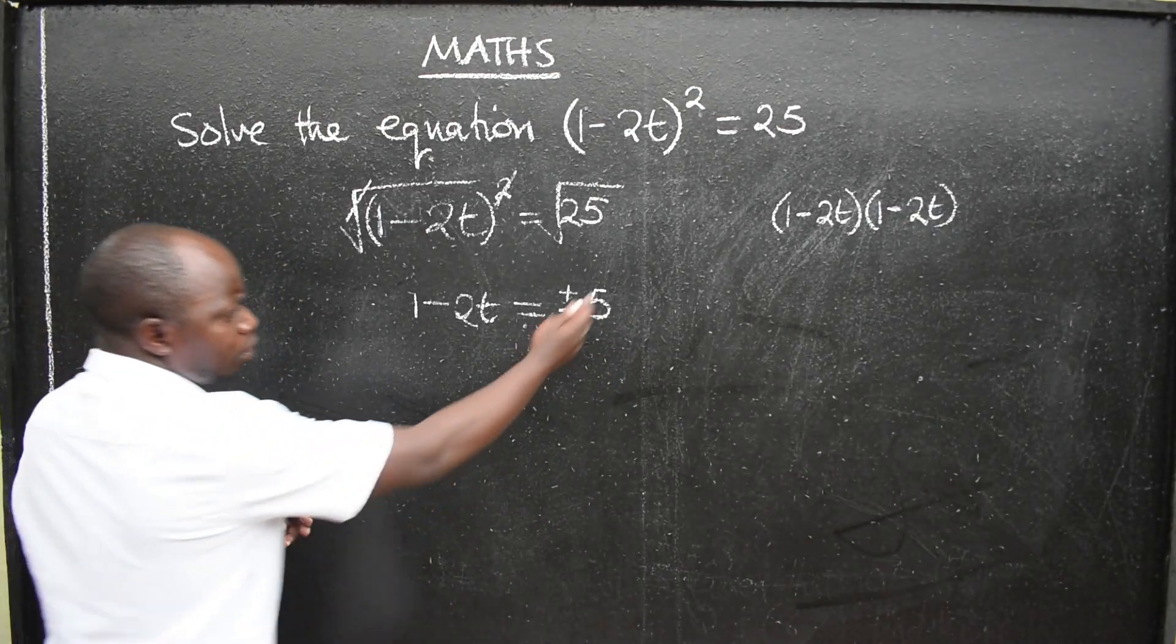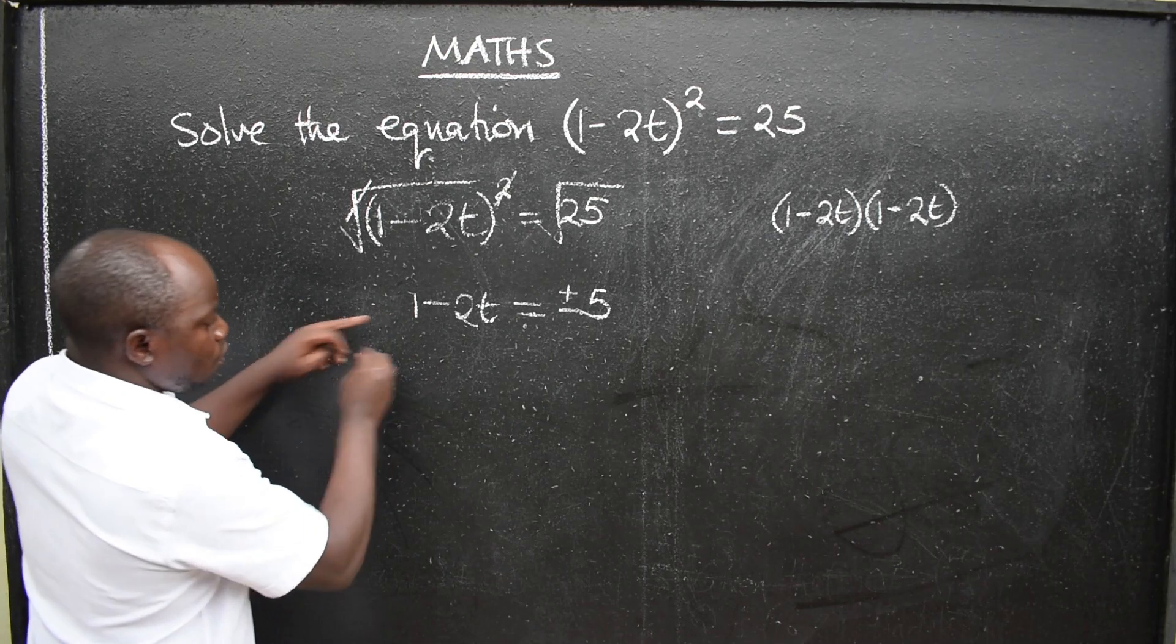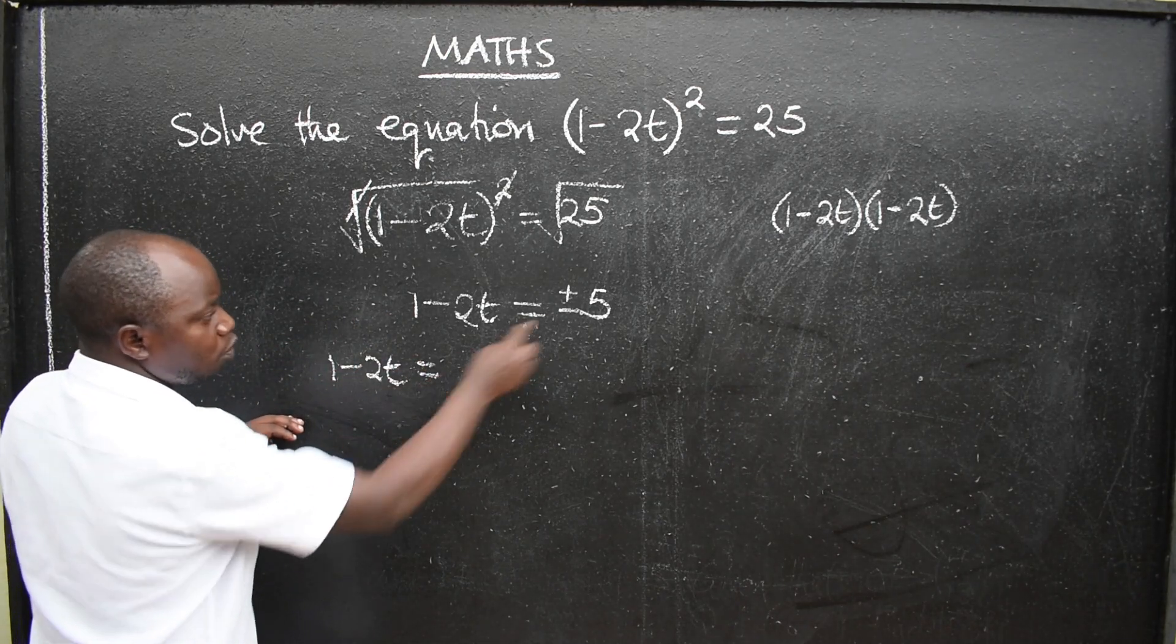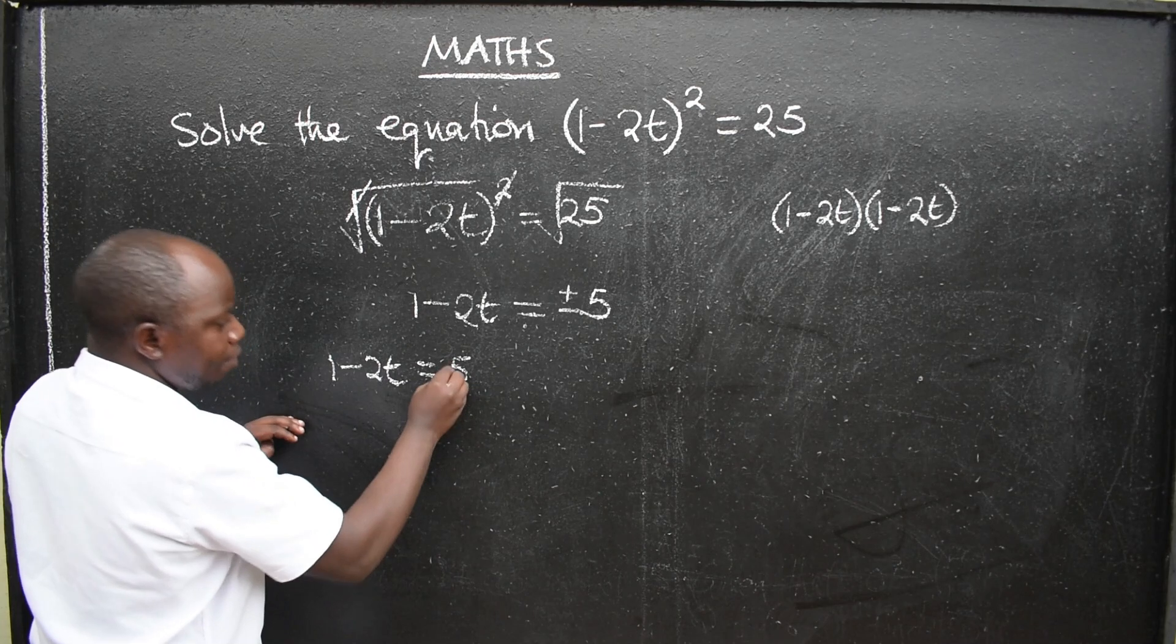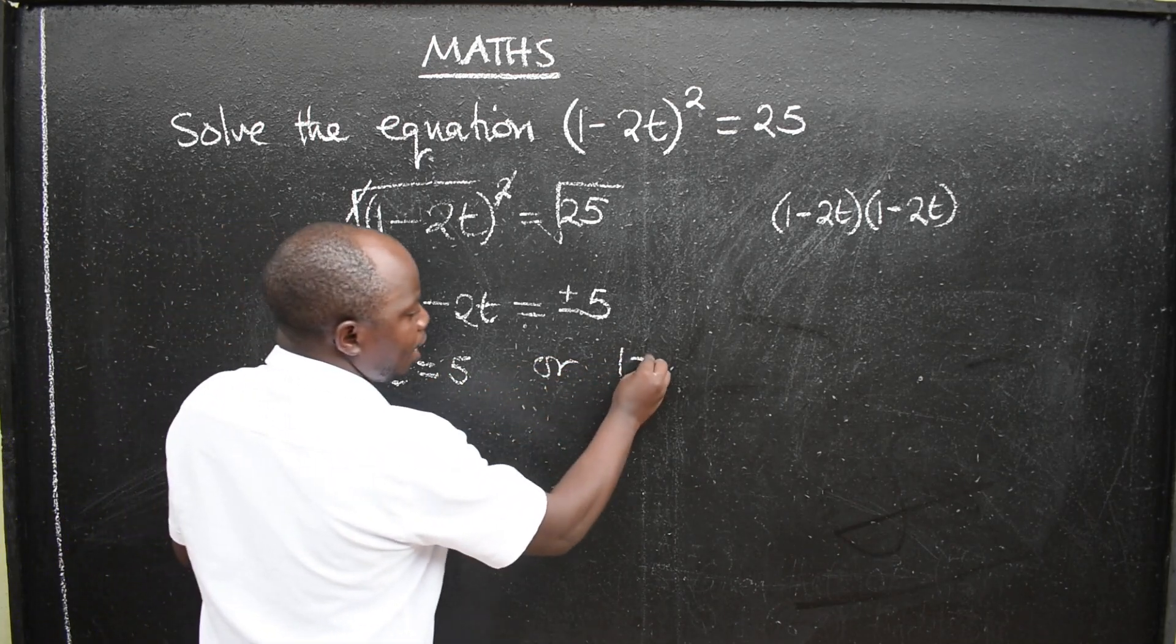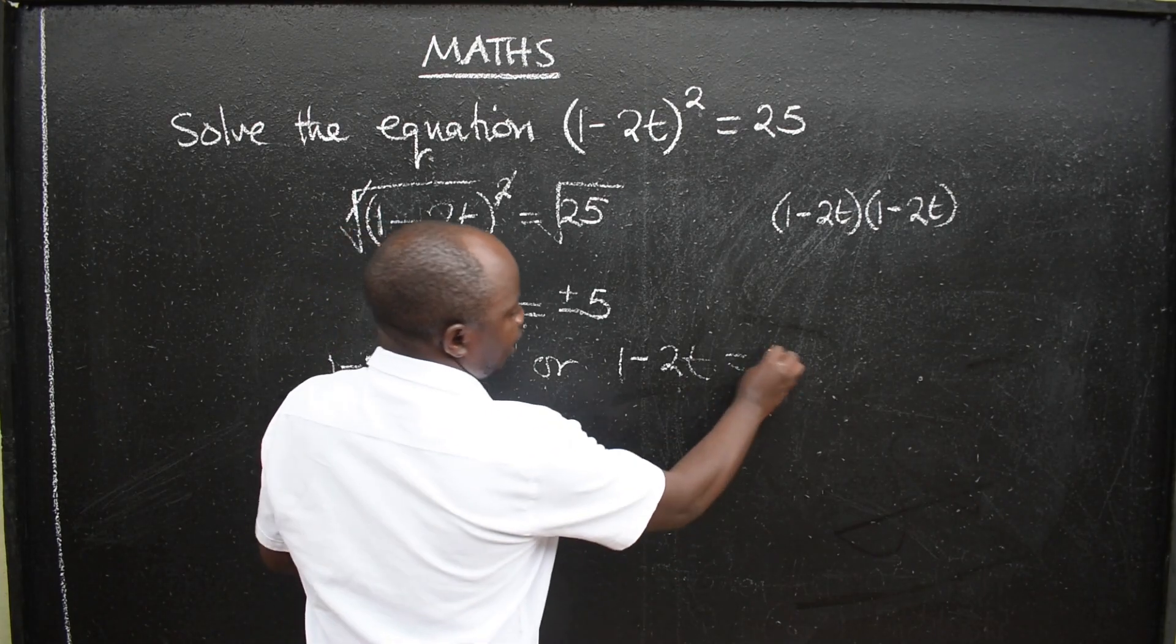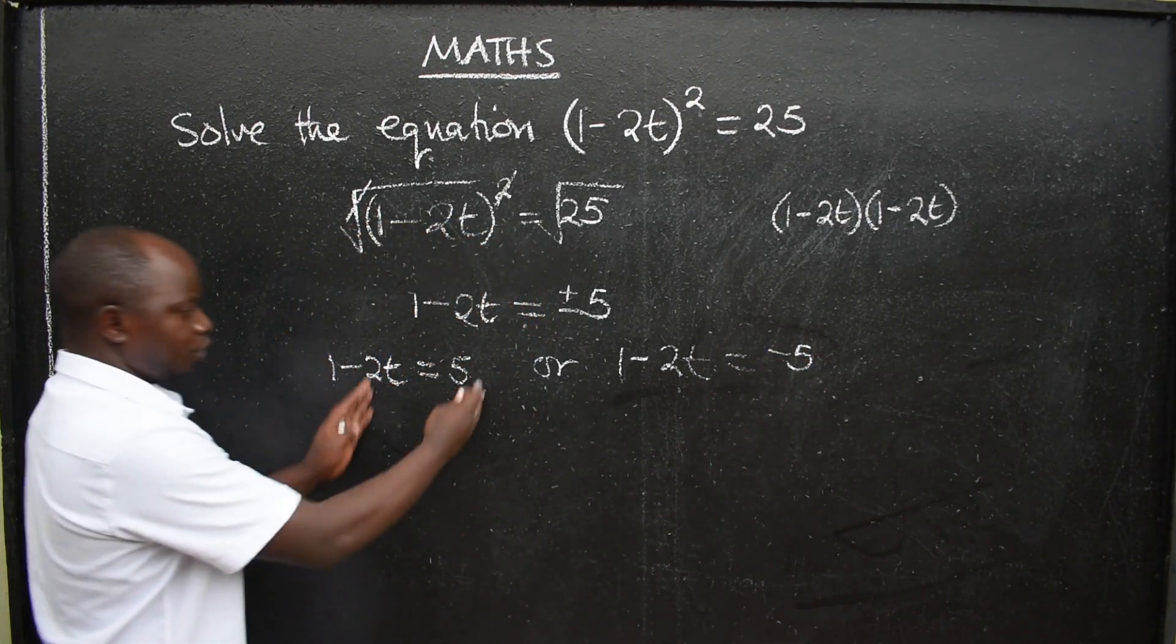From there, you are going to separate. There are two signs here. So one will be 1-2t is equal to, get a positive value, 5. Or the other one will be 1-2t, now get a negative value, negative 5. Solve these two.